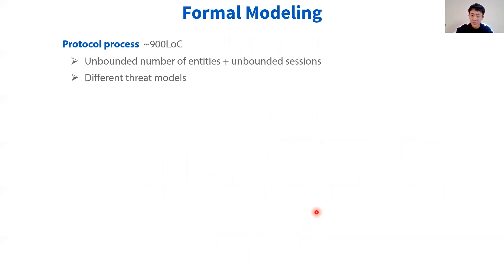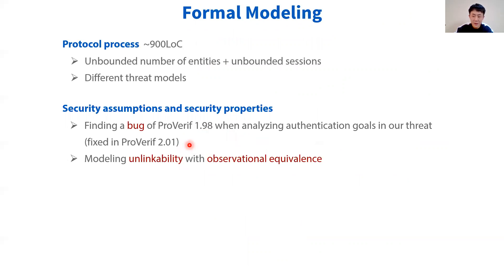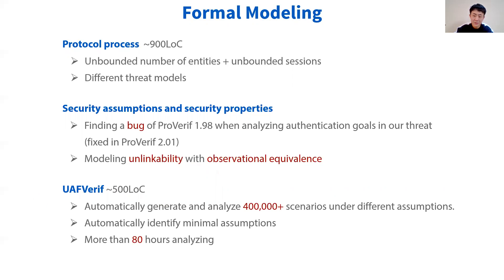The UAF protocol process was described in 1,900 lines of ProVerif code. During this process, we found a bug in ProVerif 1.98 when re-analyzing authentication goals in our threat model. We reported this bug to the developers of ProVerif, who fixed it in ProVerif 1.01. We use observational equivalence to model and verify linkability. The UAFVerif tool we developed has 500 lines of Python code. It can automatically generate ProVerif input files to represent the protocol under different threat models, verify the protocol from weaker to stronger assumptions, record the results, and identify the minimal assumption for each security goal. There are more than 4,100 generated cases, and it took more than 80 hours to analyze all cases on a personal computer.